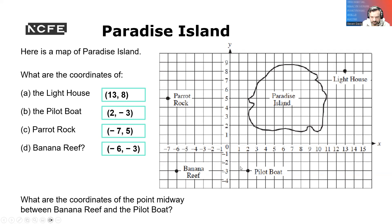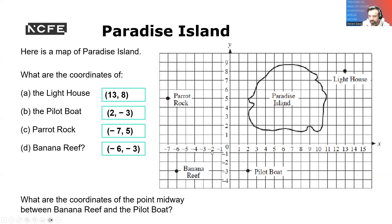What are the coordinates of the point midway between Banana Reef and the boat? So Banana Reef and the boat — we're going to go along the corridor. Is that two three, minus two, minus three? So minus two, minus three — good.